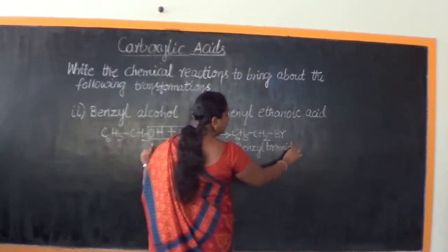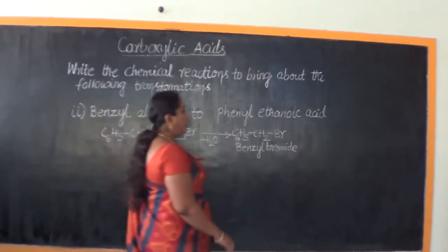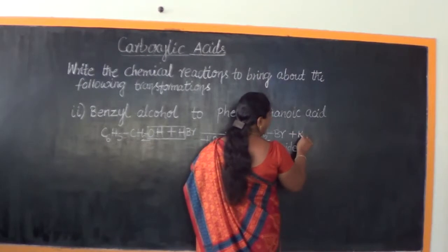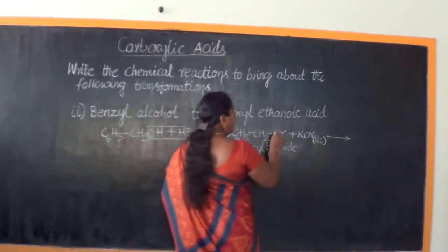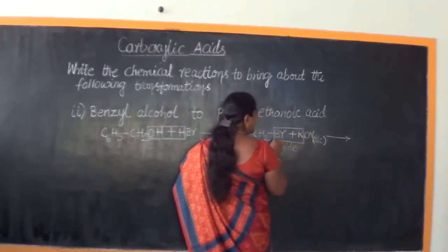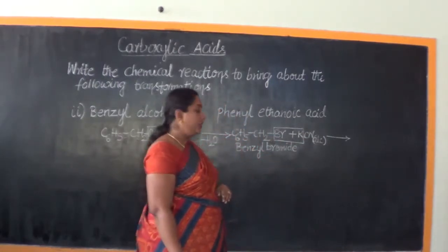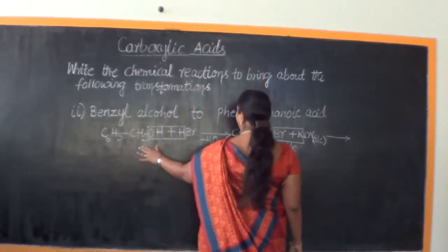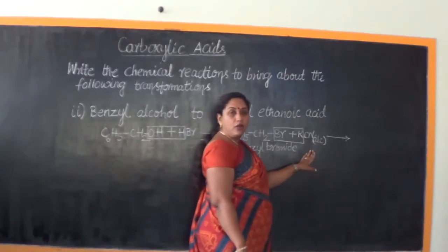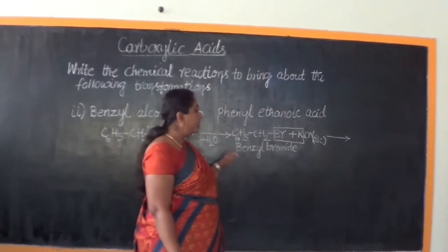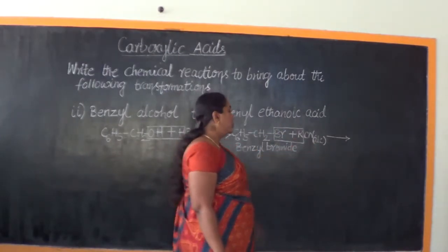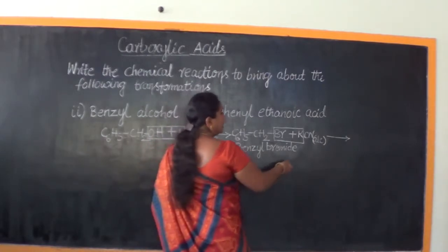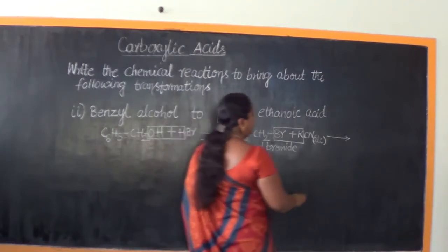This benzyl bromide is then treated with alcoholic potassium cyanide, which is another nucleophile. The CN will take attachment in the place of Br. Br combines with potassium and goes out as KBr — so there is one more nucleophilic substitution. The point of focus here is that from alkyl bromide, we go through this intermediate step — converting the alcohol into a halide, and the halide into a cyanide. CN takes the place of Br and KBr goes out.